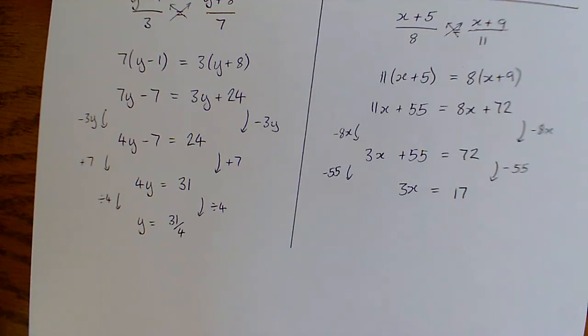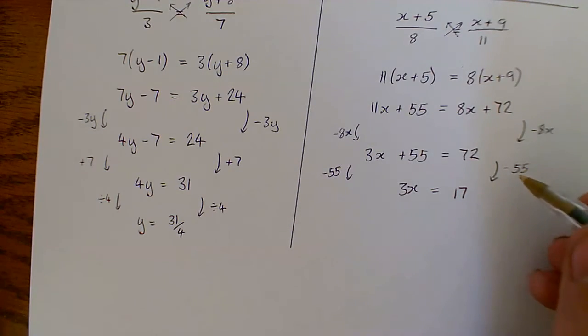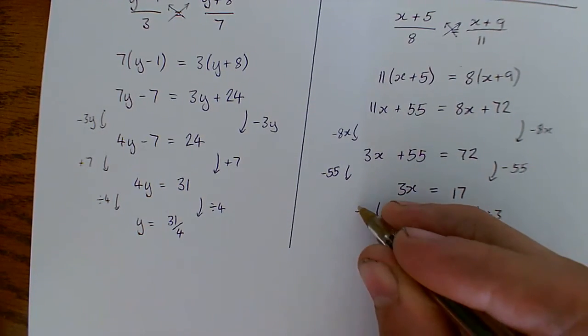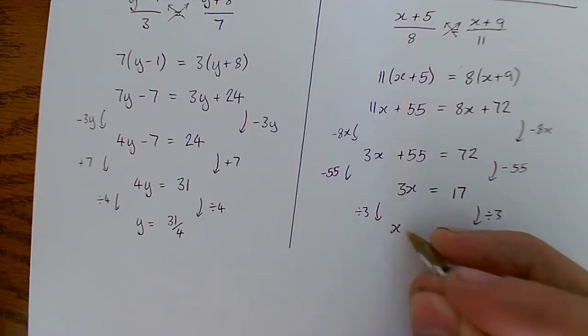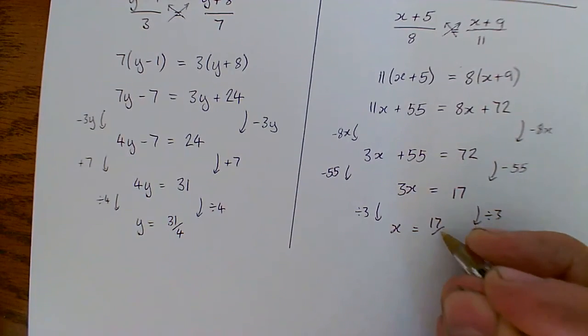On 3x. And finally divide by the 3. So x equals 17 over 3.